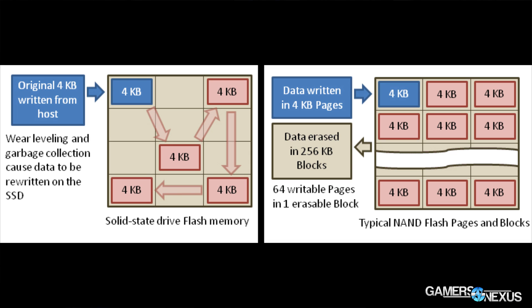It's during the garbage collection process that performance will drop, because while the controller is moving data, it can't take in new data. That internal fight over bandwidth to the flash — between the host and the controller trying to move data around — will actually slow the drive down. So when you look at benchmarks, you want to make sure whoever did the analysis performed proper preconditioning. There are various theories on how to do it, but at a minimum some preconditioning must be done. We generally recommend sequentially preconditioning before a sequential test, and randomly preconditioning before a random test. If your environment is a mix, run that mixed test long enough to ensure garbage collection is operating with that configuration.